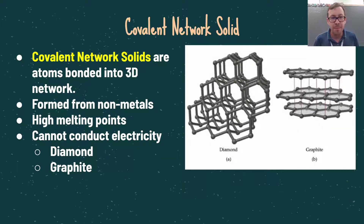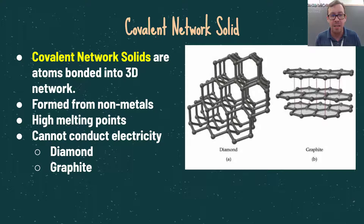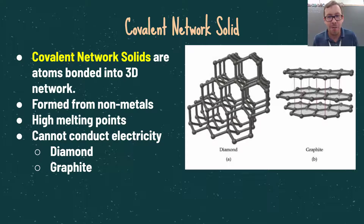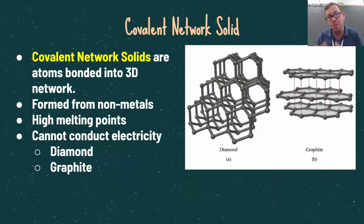Covalent network solids are atoms bonded in a three-dimensional network, typically formed from non-metals and repeating elements such as carbon or silicon. These have very high melting points because of the very strong covalent bonds holding them together, and they cannot conduct electricity. Examples include diamond and graphite — both made from carbon. In diamond, carbon atoms typically covalently bond four times, while in graphite, carbons bond fewer times. The layers of graphite are held together by intermolecular forces, so drawing a pencil on paper breaks those intermolecular forces, depositing sheets of graphite onto the paper.